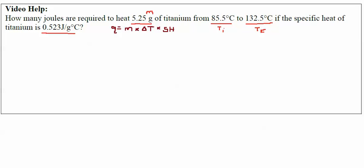So the only thing that I need to calculate now is my change in temperature. Remember, change in temperature, delta T, equals Tf, my final temperature, minus my initial temperature. Alright, so for this, Tf is 132.5, minus Ti, which in this case is 85.5.